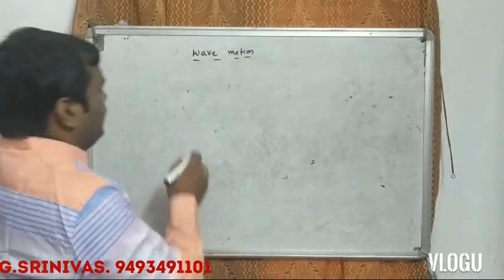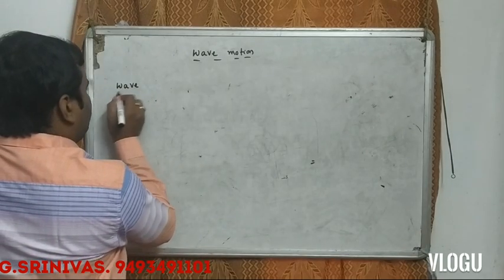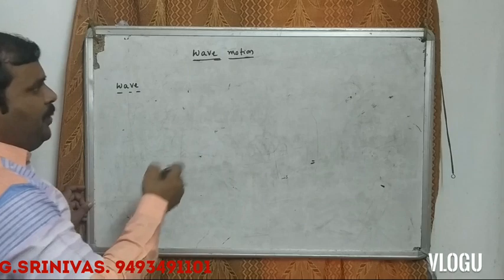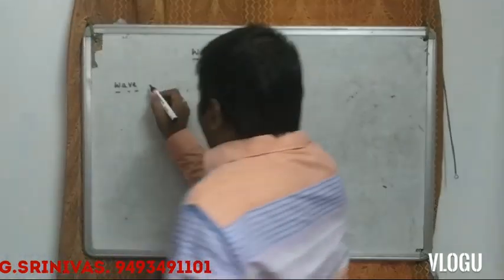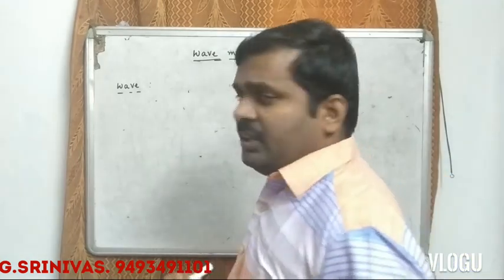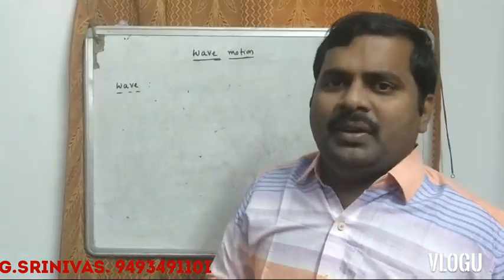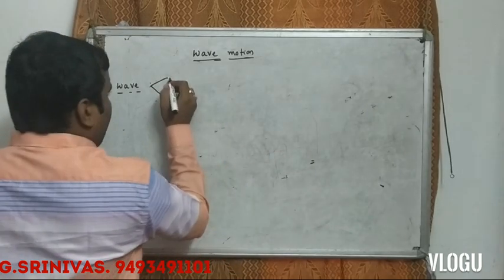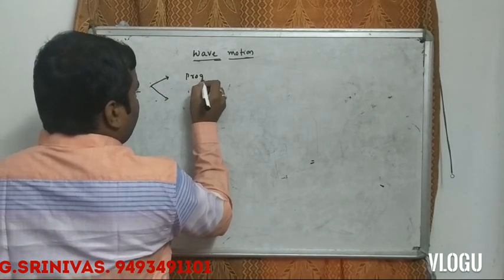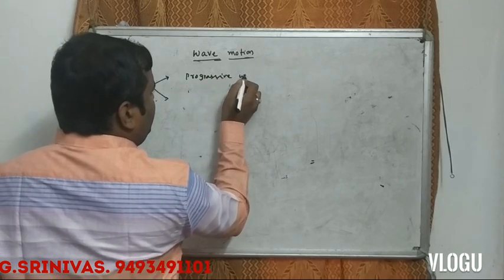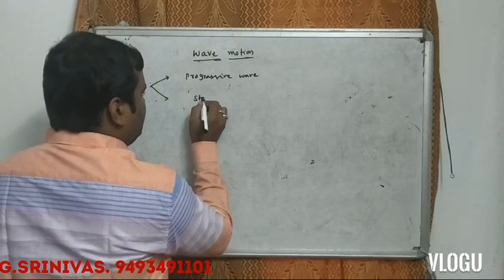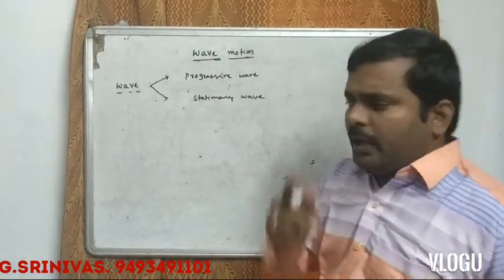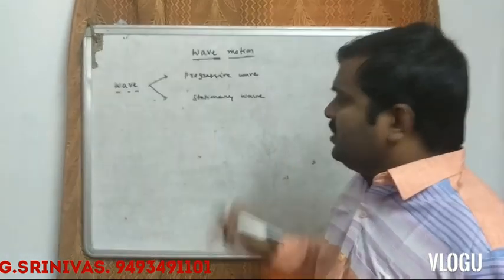So what are the fundamentals of wave motion? What is the definition of wave? Wave is nothing but a disturbance created in a medium. Waves are two types: the first one is progressive wave, and the second is stationary wave.